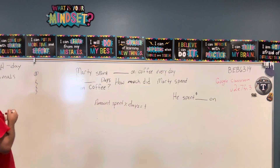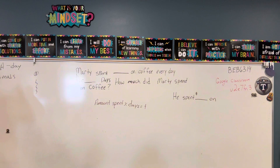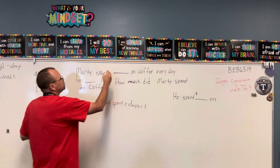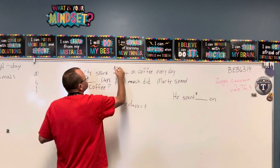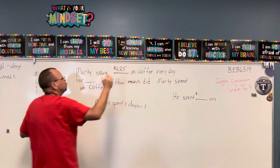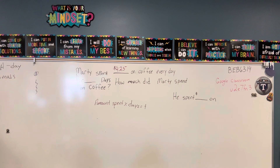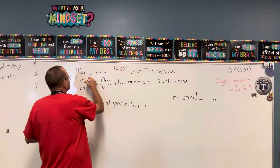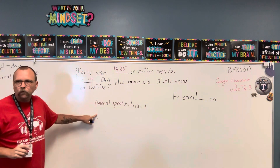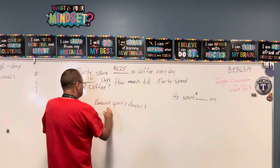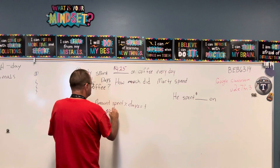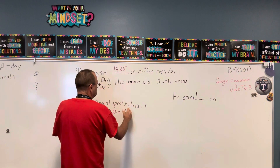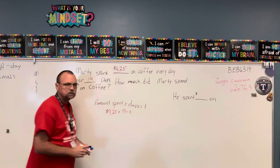All right, so if he spent four dollars and twenty-five cents a day, and he spent four dollars and twenty-five cents a day for fourteen days, our equation would be the amount spent — four dollars and twenty-five cents — times fourteen, and that's going to equal the total amount spent.